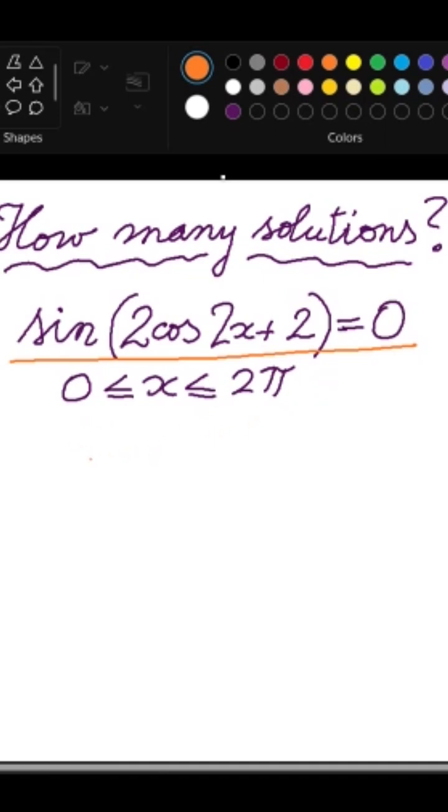We know sine is a function which has the value 0 in this interval for 0, pi, and 2 pi. This means 2 cosine of 2x plus 2 can be 0 or pi or 2 pi.